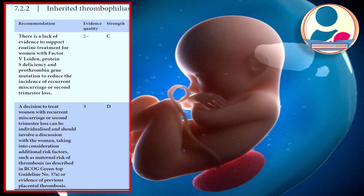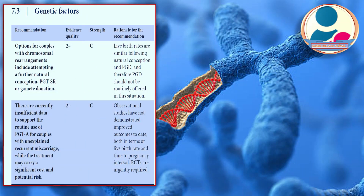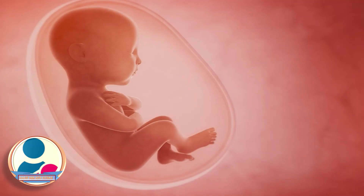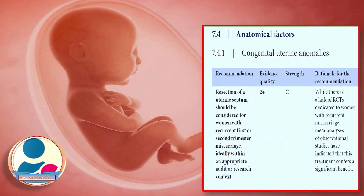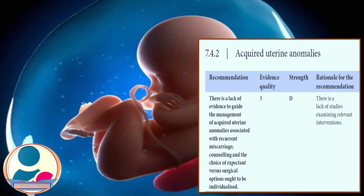A decision to treat women with recurrent miscarriage or second trimester loss should be individualized, involving discussion taking into account additional risk factors such as maternal age, maternal risk of thrombosis, or evidence of previous placental thrombosis. Options for couples with chromosomal rearrangements include attempting further natural conception, PGT-SR, or gamete donation. Resection of a uterine septum should be considered for recurrent first or second trimester miscarriage within an appropriate audit or research context. For acquired uterine anomalies, counseling and choice between expectant versus surgical management should be individualized.